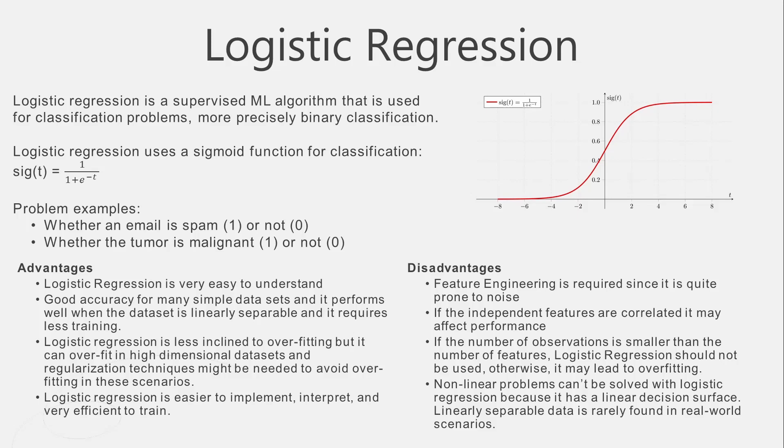As in any other algorithm, logistic regression has advantages and disadvantages. The advantages are: it is easy to understand, it has good accuracy on simple data sets, it performs well when the data is linearly separable, it does not overfit easily, and in the case of high dimensional data there are regularization techniques that can be applied. It is also very easy to implement, interpret, and can be trained efficiently.